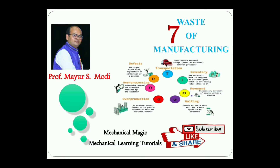Welcome to my YouTube channel, Mechanical Magic - Mechanical Learning Tutorials. In this video, I am talking about the seven wastes of the manufacturing system. These are seven kinds of activities considered as waste in the field of manufacturing technology, which reduce the productivity of industries. Every industry should take care about these seven wastes of manufacturing.